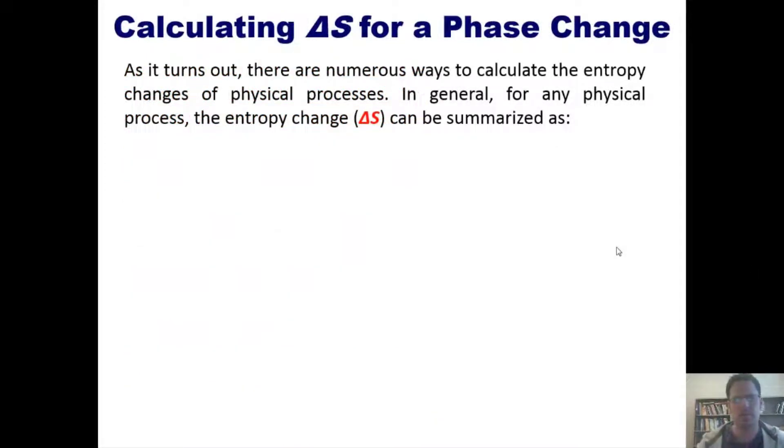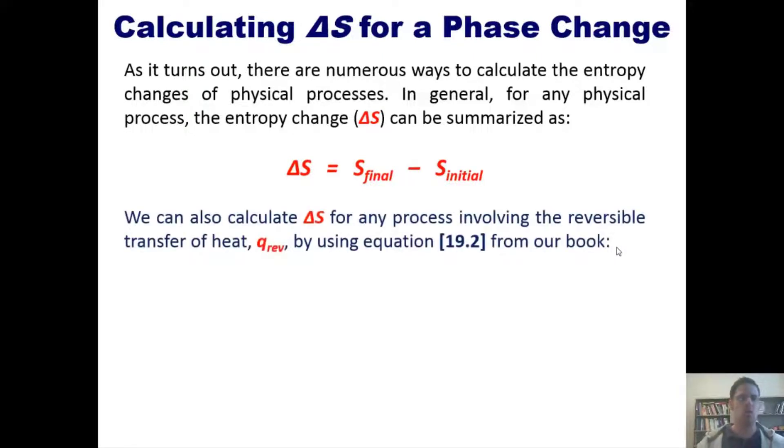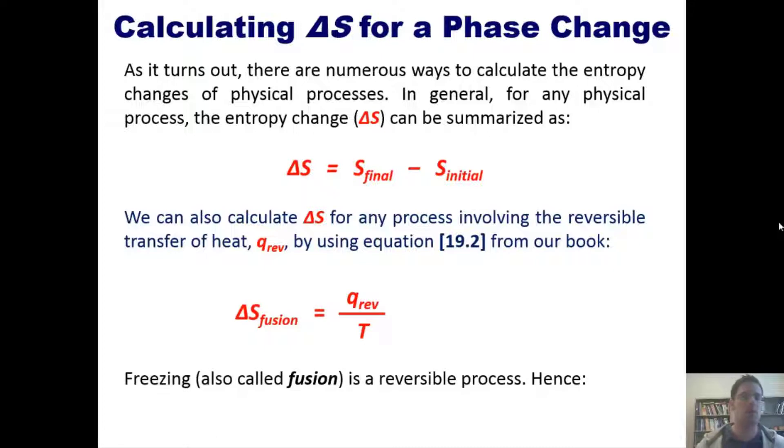As it turns out, there are a number of ways to calculate the entropy changes of physical processes. In general, for any physical process, the entropy change or delta S can be summarized as or is equal to the final entropy state minus the initial entropy state. We can also calculate delta S for any process involving the reversible transfer of heat, abbreviated here as q_reverse, by using equation 19.2 from our book, which is this one: the delta S of fusion is equal to q_reverse divided by T. Freezing, also called fusion, is a reversible process. Hence this term is also equal to the delta enthalpy of fusion divided by T, because for reversible processes q and delta H heat transfer are the same.